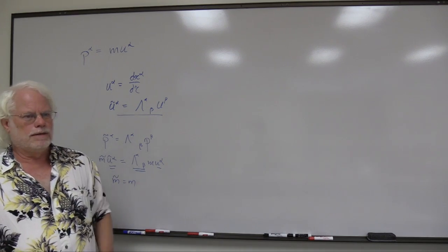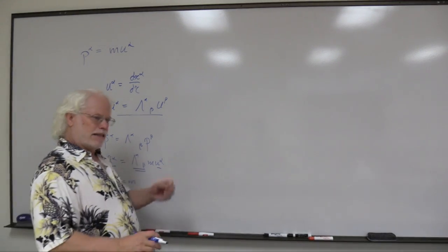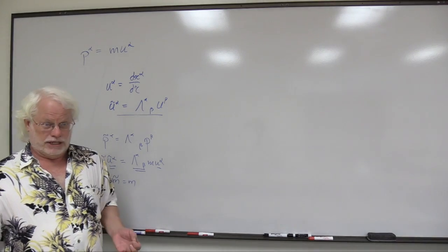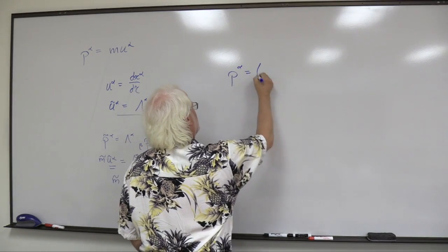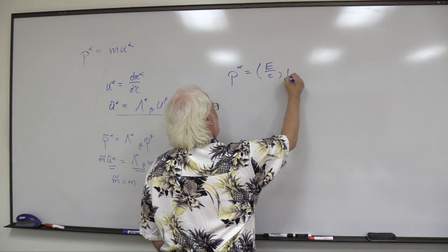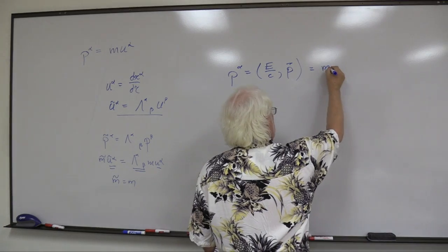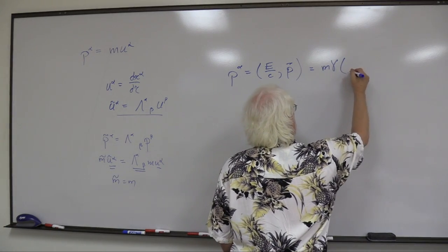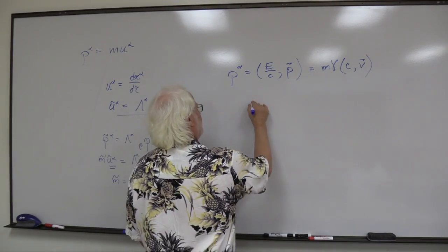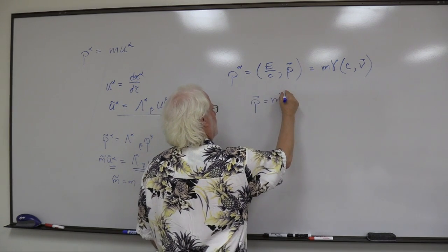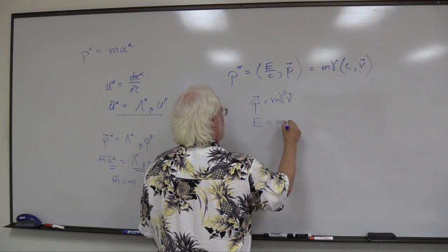It does not transform with velocity; it is independent of velocity. The thing that does depend on velocity is the energy — there's kinetic energy. So p^alpha is energy over the speed of light and the three-momentum. We just showed it can be written as the constant m times (gamma*c, gamma*v). So we can identify the three-momentum as m*gamma*v and the energy as m*c²*gamma.